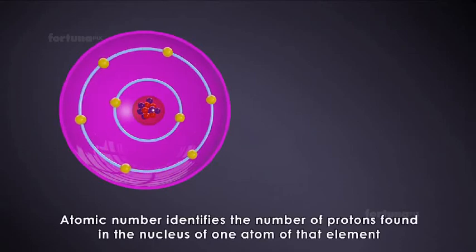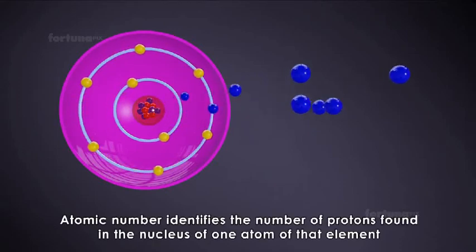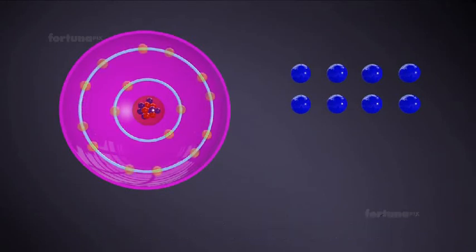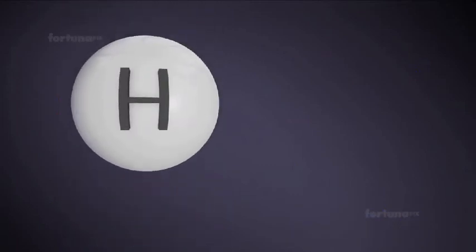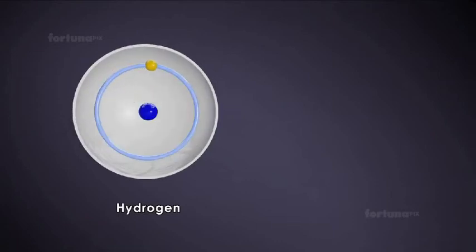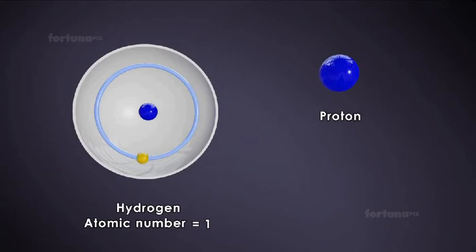An element's atomic number identifies the number of protons found in the nucleus of one atom of that element. For example, the element hydrogen is made up of a hydrogen atom. Its nucleus will have only one proton, so the atomic number of hydrogen is one.